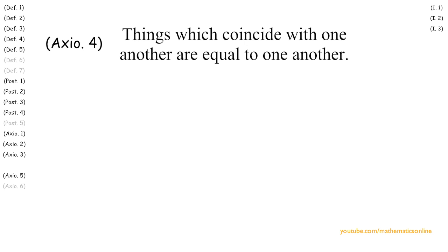First we begin by explaining Axiom 4, which says, things which coincide with one another are equal to one another.